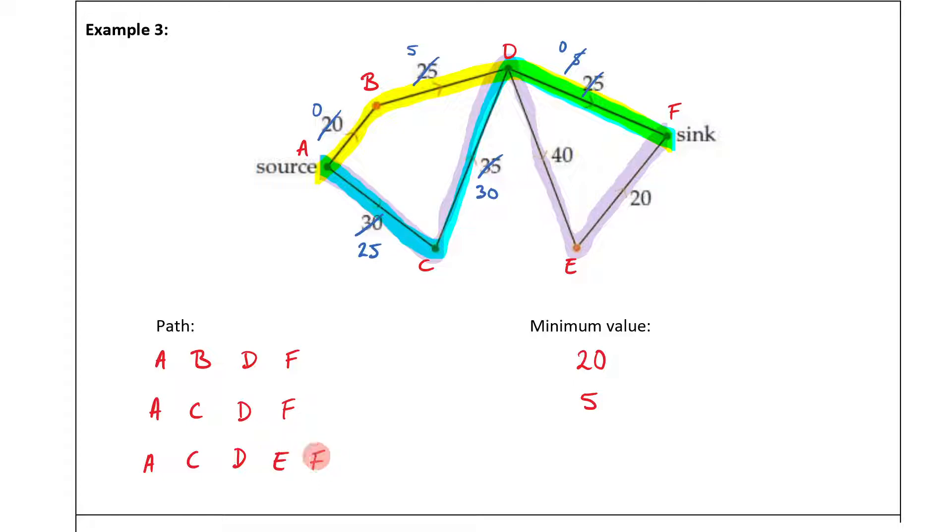What is the minimum value of this pathway? Well, I've got 25, 30, 40, and 20. So it's going to be 20. And then I want to subtract 20 from all of these numbers. So this is now 0, this is now 20, 30 minus 20 is 10, and 25 minus 20 is 5.